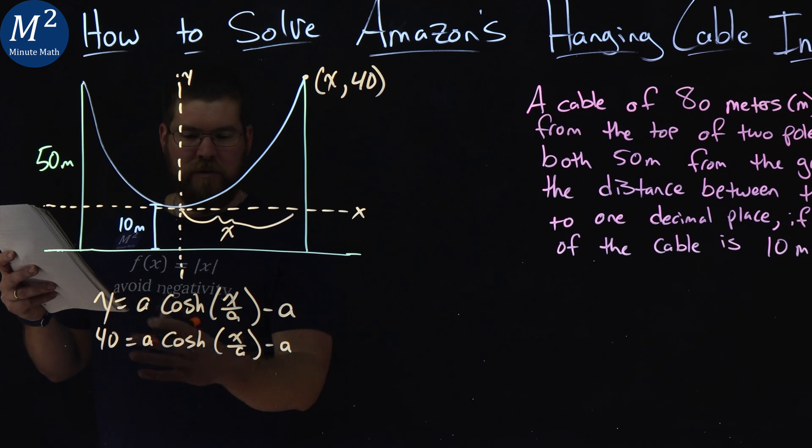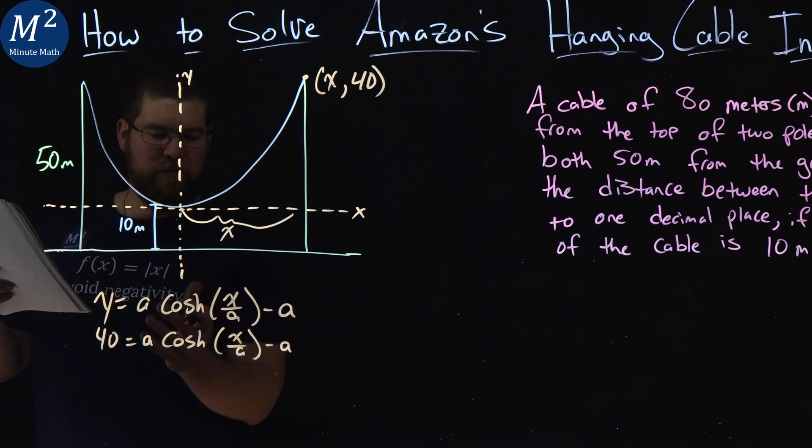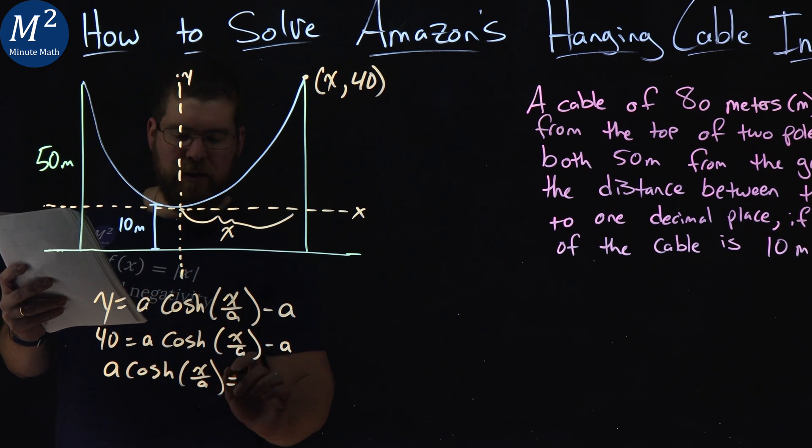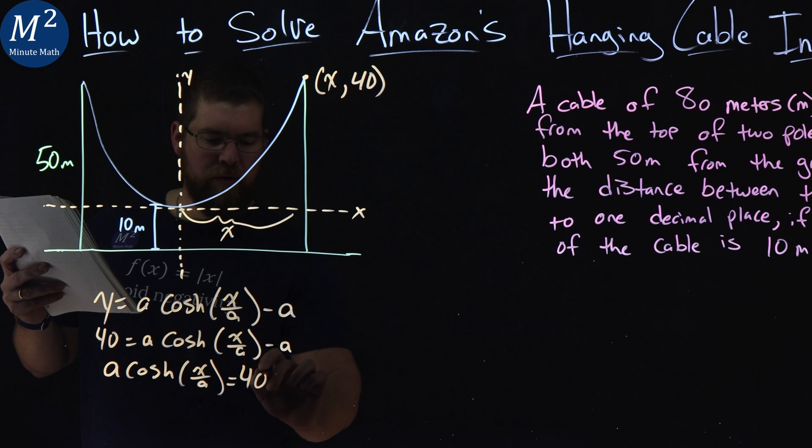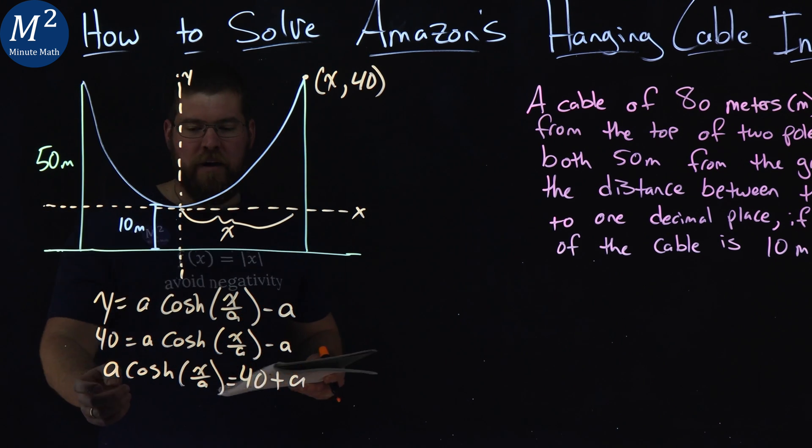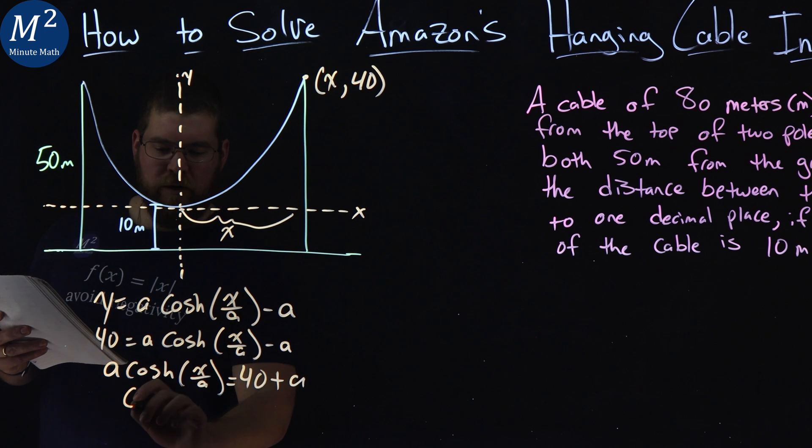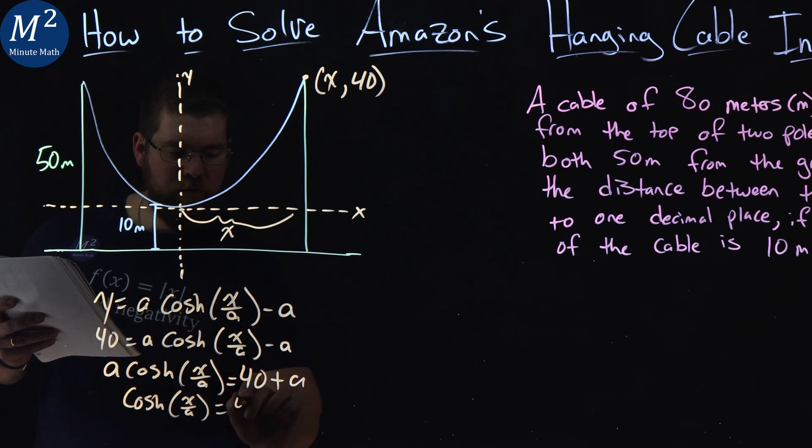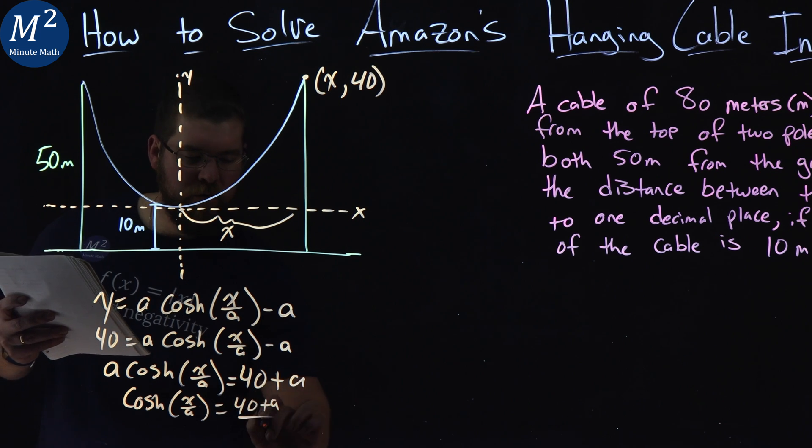Now we're going to simplify this, bring the a over to the left side and kind of slip it around. We have a cosh of x over a, just doing some simplification here, is equal to 40 plus a. Then from there, divide both sides by a and we get cosh of x over a equals 40 plus a over a.